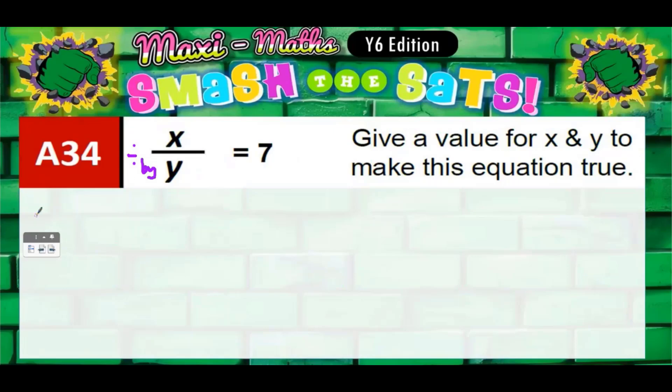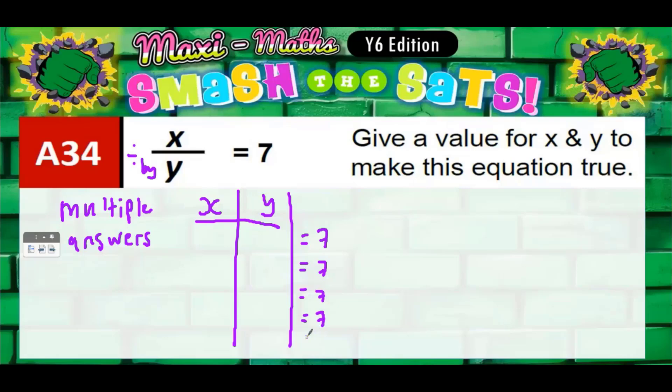Now there are multiple answers to this, lots of different answers that you could give. So let's just think of some that we could give. We'll have a little table to put some answers in there - x's and y's. Well, as long as whatever x is divided by whatever y is gives you 7, it's got to equal 7. So we'll just put some equal 7s down the side and then we'll just start thinking of answers.